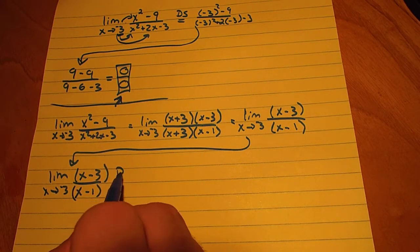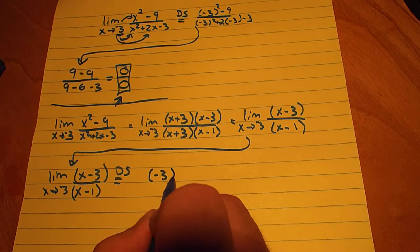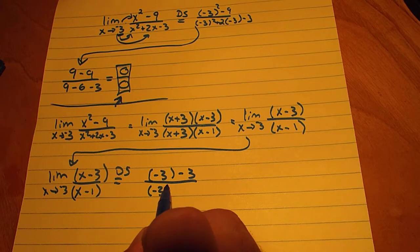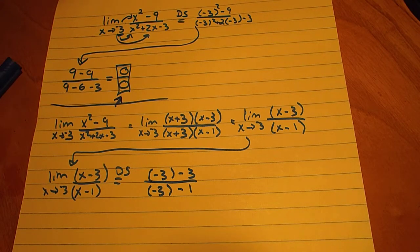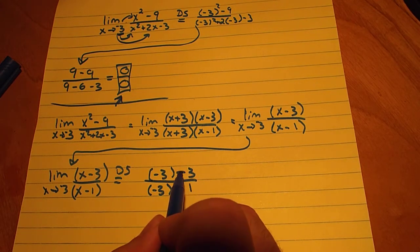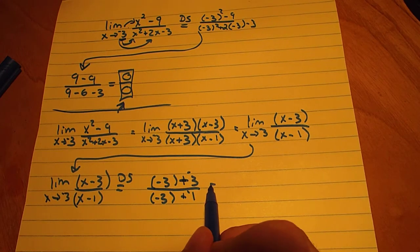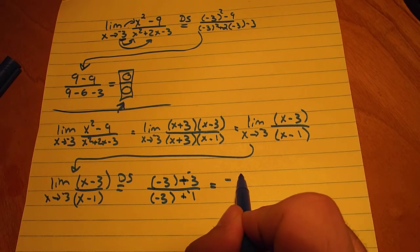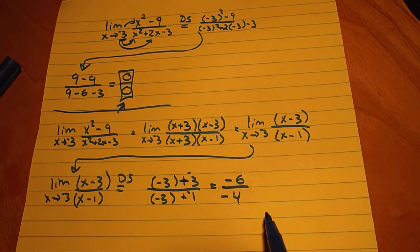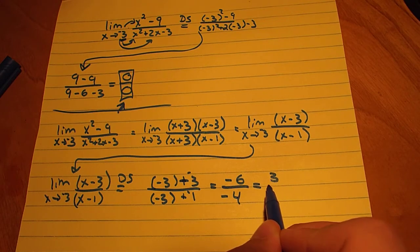If we direct substitute with negative 3, we end up with negative 3 minus 3 over negative 3 minus 1. So let me simplify this fraction. We know when you subtract numbers you can just add the negative, same thing here. So we end up with negative 6 over negative 4, which further reduces down to 3 over 2.